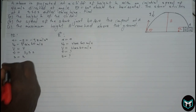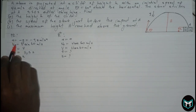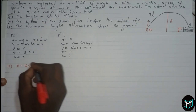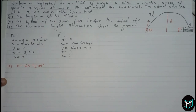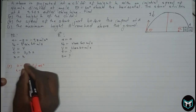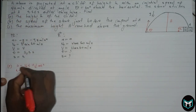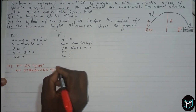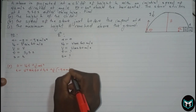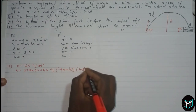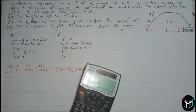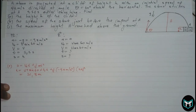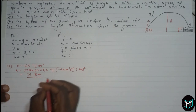For Part A — the height of the cliff — we have acceleration, initial velocity, and time, so we use s equals v-naught times t plus half a t squared. Substituting: h equals 42 sine 60 times 5.5 plus one half times negative 9.8 times 5.5 squared. The answer is h equals 51.8 meters. That is the height of the cliff.